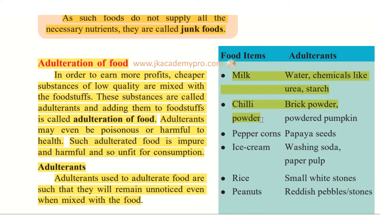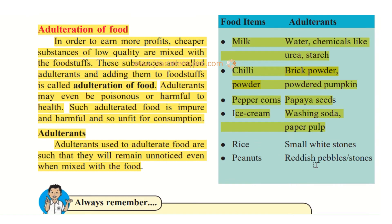In chili powder, they add brick powder or powdered pumpkin. In pepper corns, they add papaya seeds. In ice cream, they add washing soda and paper pulp — paper soaked in water until mashed, which is very repulsive. In rice, they add small white stones. In peanuts, they add reddish pebbles or small stones that resemble peanuts.